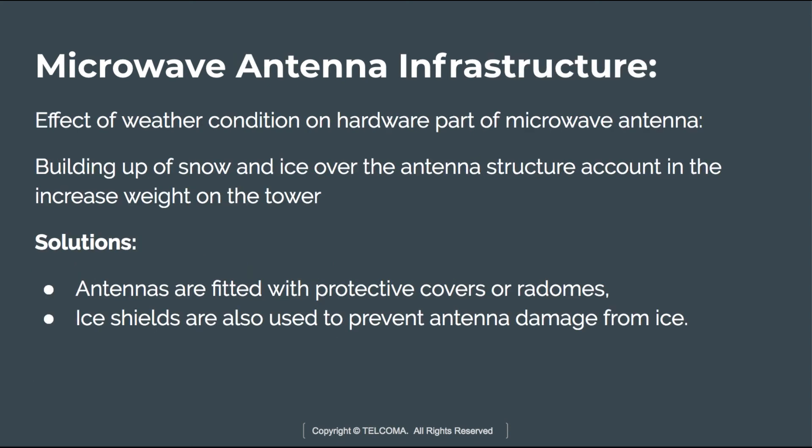The next topic is microwave antenna infrastructure. Weather conditions also affect the hardware of microwave antennas. The buildup of snow and ice over the antenna structure increases the load on the tower. The solution is to fit a protective cover or radomes over the antennas to hold off falling snow. Ice shields are also installed to prevent antenna damage. Radomes are particularly useful for large long-haul microwave antennas that are already heavy and prone to high wind loads, as they reduce wind load and prevent ice and snow buildup in front of the antenna.